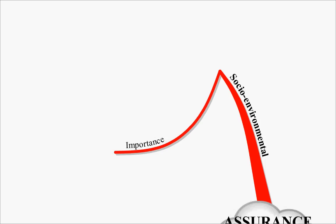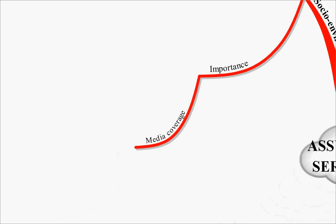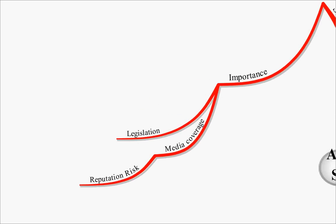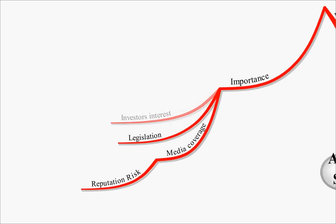The importance of these at the minute is extremely high, especially if we can see what's happening with the BP oil spill in the Gulf of Mexico. The importance will surround things like the media coverage of socio-environmental issues, the reputation risk that that involves, very plain to see from the oil spill that we see at the minute, and legislation that's in place and complying with that legislation.